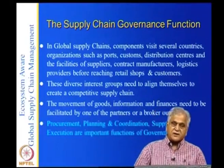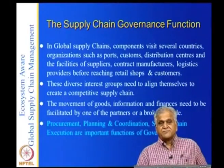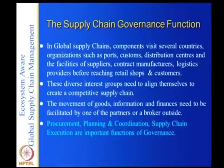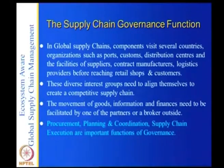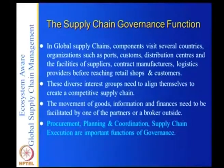The functions of supply chain governance include procurement — where manufacturing procures from suppliers, which is typically global and international; planning and coordination — who does what and when, essentially supplying people with plans; and execution — monitoring and control. These are all important functions of governance.